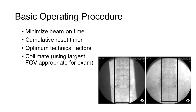You can also make use of the cumulative reset timer. An audible alarm should sound every 5 minutes of fluoro, but you should make sure to track the entire amount of fluoroscopic beam on time for any procedure. Optimum technical factors should be employed, generally using the lowest MA setting and highest KVP appropriate for the fluoroscopic examination.